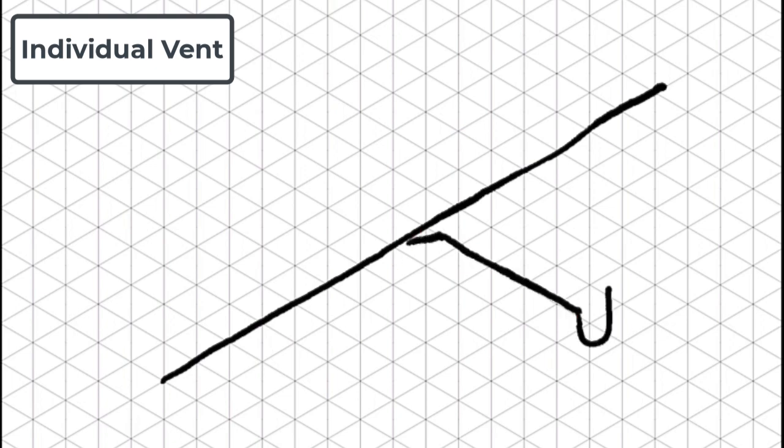In this illustration we see an individual vent, but there is a violation here because the vent is connected to a horizontal branch instead of the trap arm. The vent should come directly off of that trap arm.